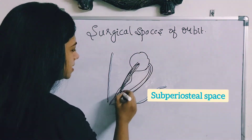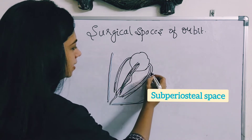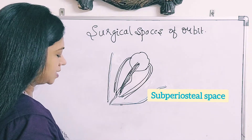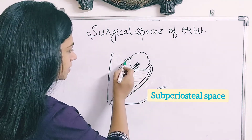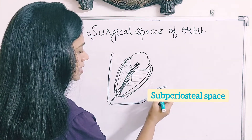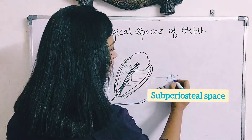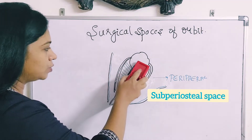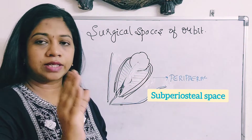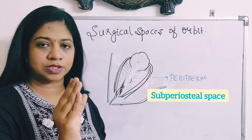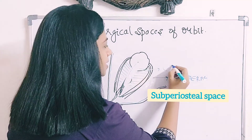These are the extraocular muscles inserting onto the sclera of the eyeball — the lateral rectus muscle, medial rectus muscle, and the superior rectus muscle. We also have the intermuscular septum connecting these muscles. The space between the periorbita and the extraocular muscles is called the peripheral space. Inside the cone formed by the extraocular muscles, behind the eyeball, is the central space.